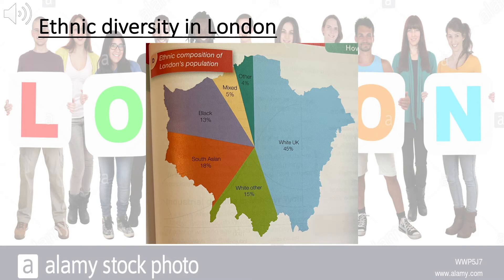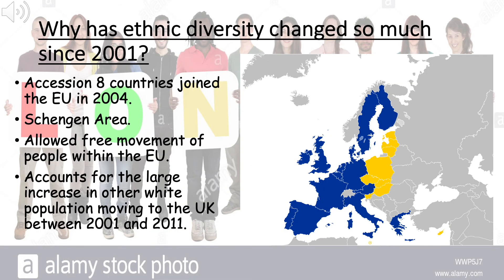The ones we're going to focus on will be white other and how this has changed since 2001. So why has ethnic diversity changed so much since 2001? Well, the biggest change to the ethnic composition of London is the increase in whites. This is caused by the migration of many young adults from 10 Eastern European countries such as Poland, which joined the EU in 2004 and whose inhabitants were therefore permitted to live and work in the UK. This is because of what's called the Schengen Agreement, agreed back in 1985, where EU member states had freedom of travel and work in their different countries. So this accounts for the large increase in the other white population moving to the UK between 2001 and 2011.